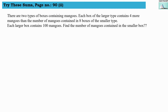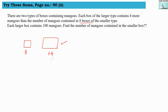Let us first understand the question and try to write an equation for that. There are two types of boxes — small boxes and larger boxes. Each box of the larger type contains four more mangoes than the mangoes contained in eight boxes of the smaller type. Here, the smaller boxes are eight in number, and the larger boxes have four more mangoes than those eight boxes.